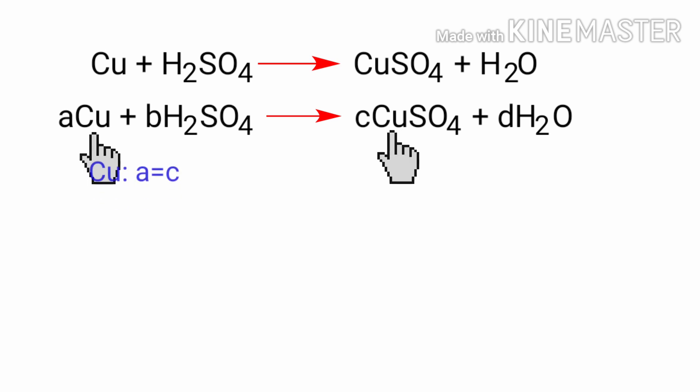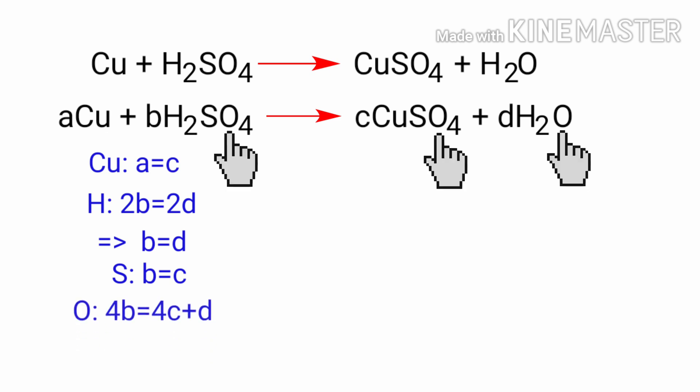For copper, a equals c. For hydrogen, 2b equals 2d, so b equals d. For sulfur, b equals c. For oxygen, 4b equals 4c plus d.